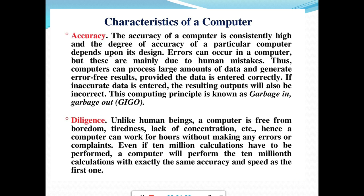Next is accuracy. The accuracy of a computer is consistently high, and the degree of accuracy depends upon its design. Errors can occur in a computer, but these are mainly due to human mistakes. Thus, computers can process large amounts of data and generate error-free results, provided the data is entered correctly. If inaccurate data is entered, the resulting output will also be incorrect. So accuracy depends on the data that is given to a computer.